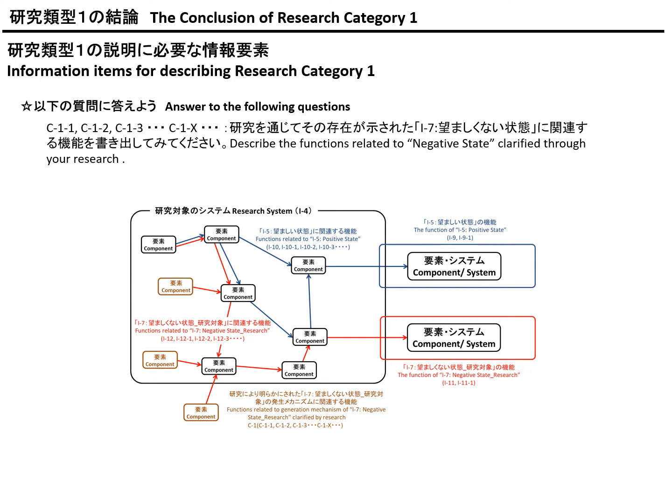When I introduced the objective of Research Category 1, I want you to remember that there were components and a red arrow with a question mark as a kind of hypothesis — functions as a generation mechanism for the negative state. But now, through your research activity, the question mark is removed. The achievement should be that some of the functions have been clarified as the true generation mechanism of the negative state.